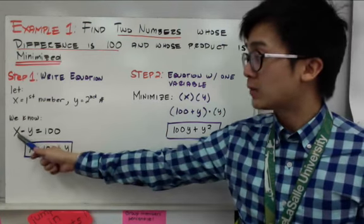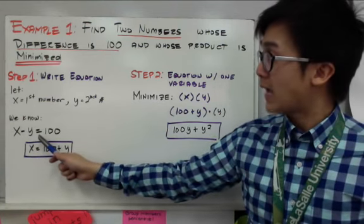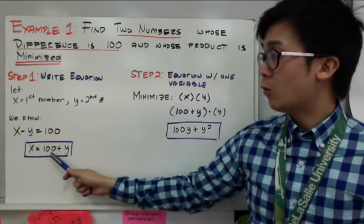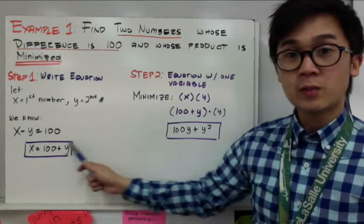Since we're only working with one variable, we can either isolate x or y. In this example, I will isolate x in my equation. So I'll have x is equal to 100 plus y. So this is my first equation.